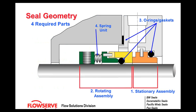Here are the main component parts that make up a mechanical seal. You'll see there's a stationary assembly, item number one; a rotating assembly, item number two; some sort of spring which applies a closing force; and o-rings and gaskets that seal all of the adaptive hardware.